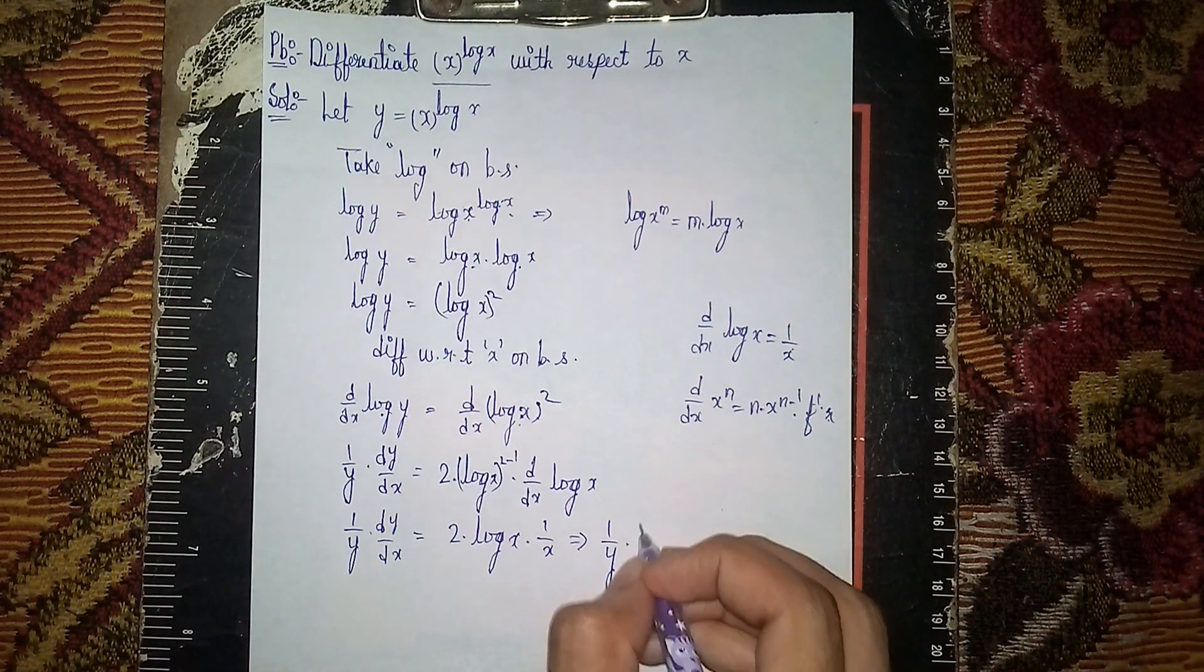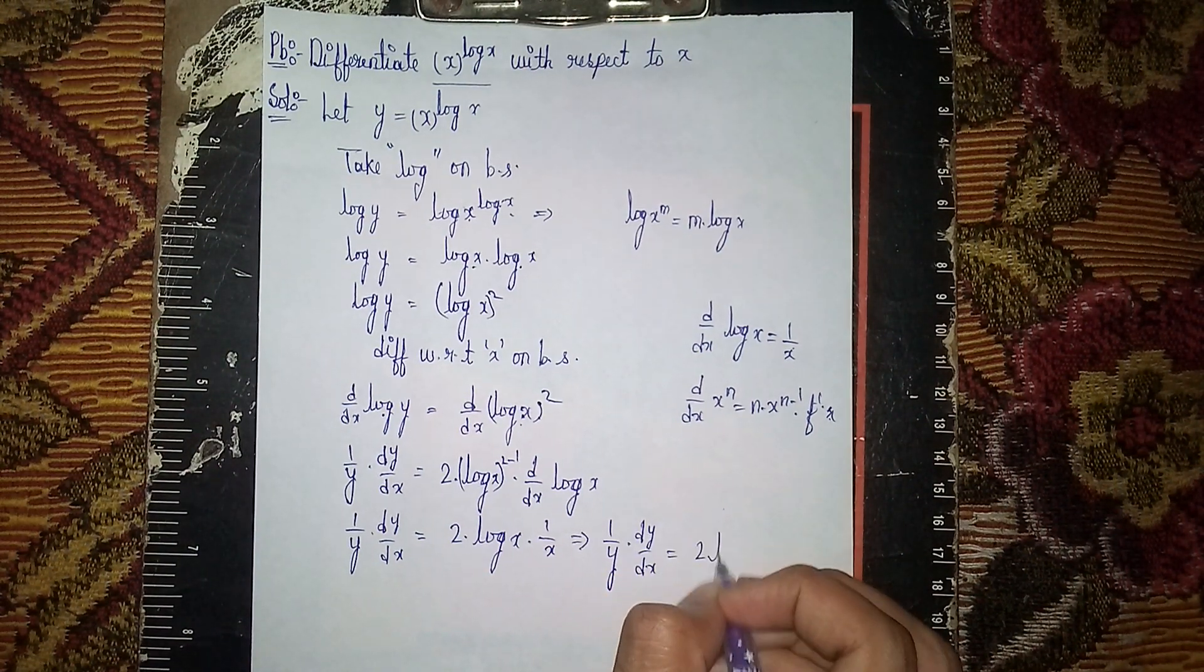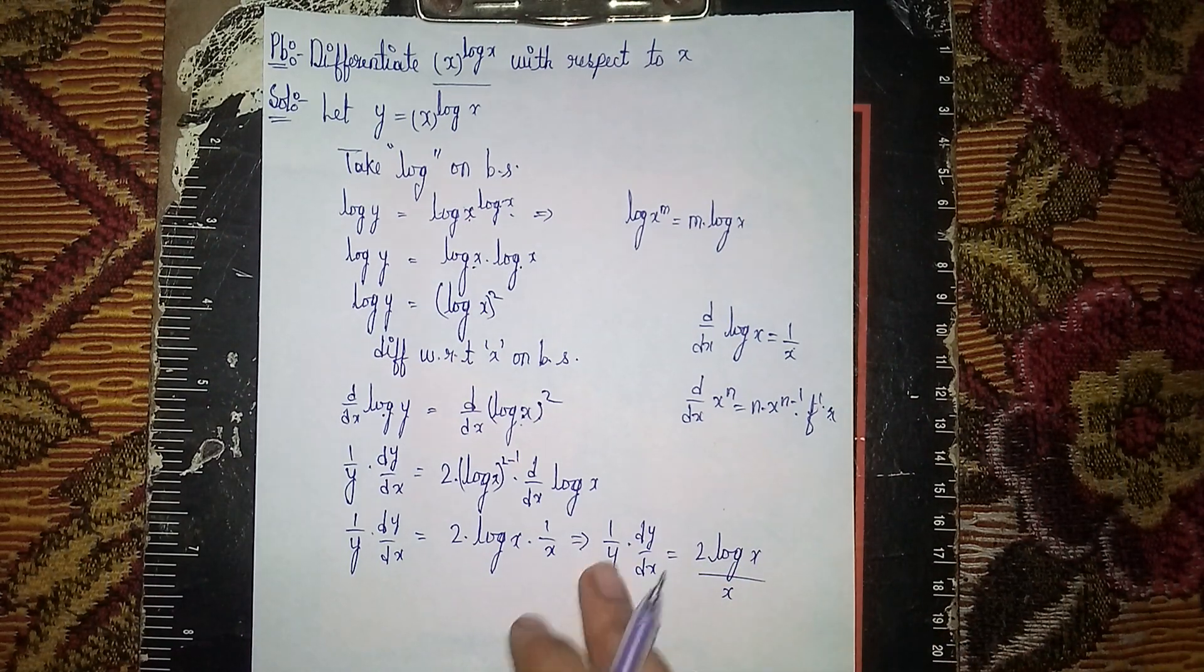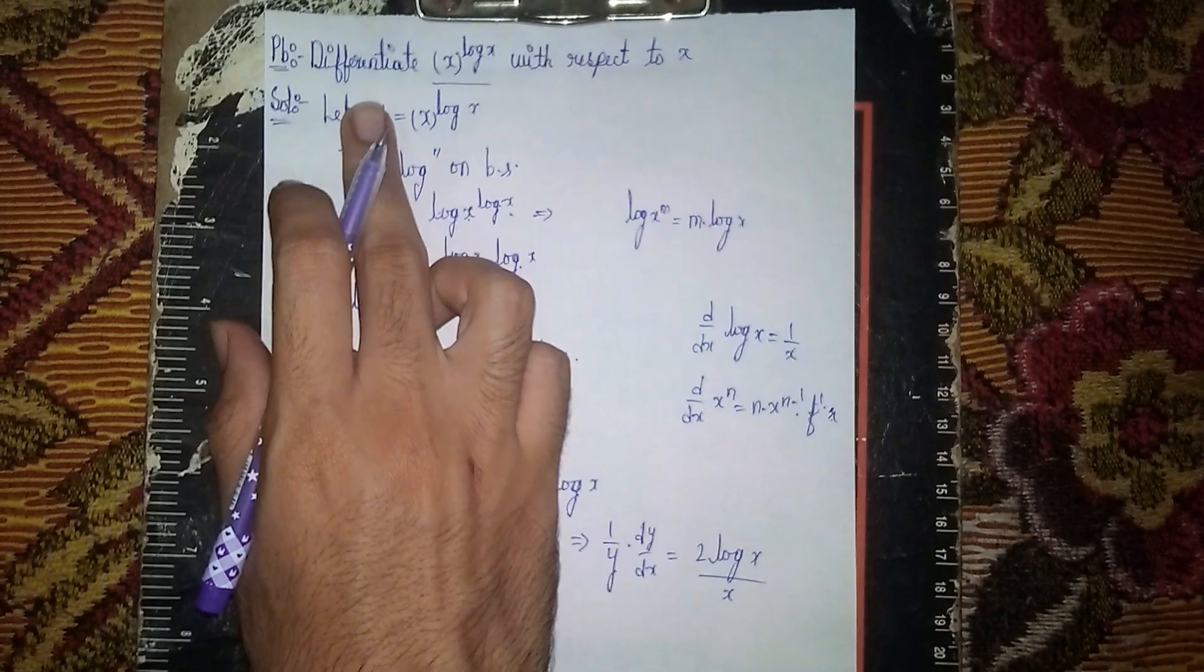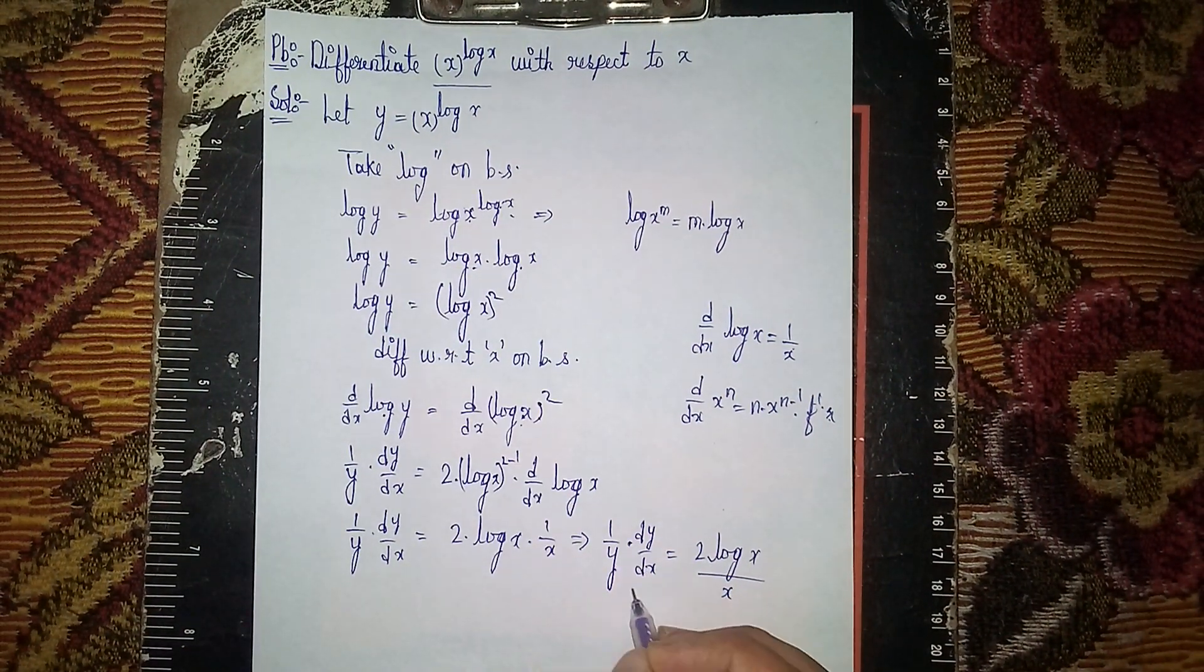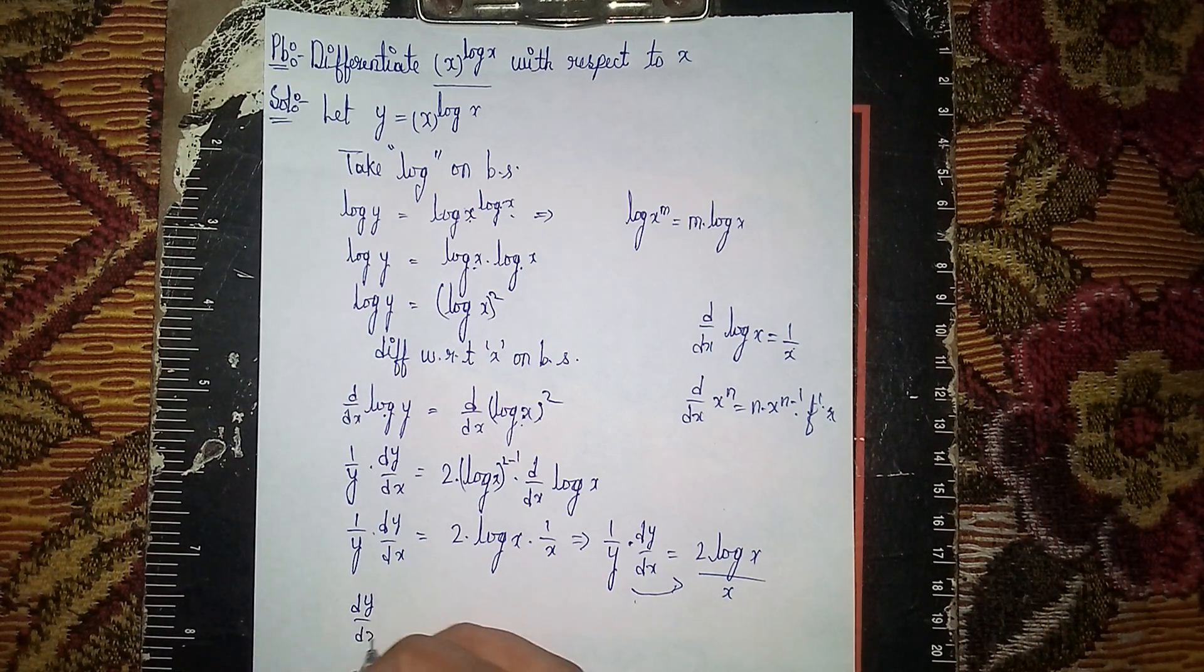The question asks for dy/dx. So multiply both sides by y: dy/dx = y times (2 log x / x).